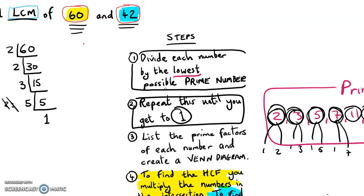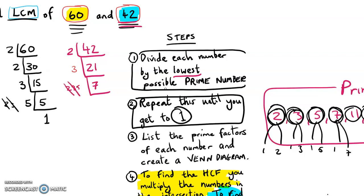Now I do the exact same except for the other number, which is 42. I divide by the lowest possible prime, which is 2. When I divide 42 by 2, I get 21. I go again and try to divide by 2 — no, 2 doesn't go into 21. So I try 3 — yes, 3 goes into 21, it goes in 7 times. Try to divide 7 by 2 — no. 3 — no. 5 — no. The next lowest prime number that will go into 7 is 7 itself, and that will go in once. So now I've done 42 — I've divided both numbers, 60 and 42, by the lowest possible primes until I get to the number 1.